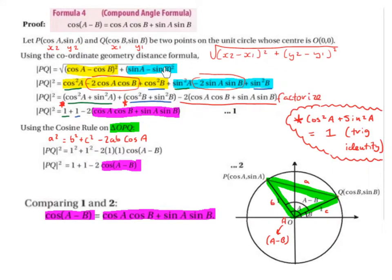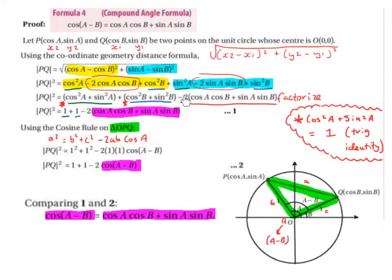Likewise, (sin a - sin b)² gives sin²a - 2sin(a)sin(b) + sin²b. Next we simplify. So cos²a and sin²a give us cos²a + sin²a — that's a very important trigonometric identity. Then cos²b and sin²b give us cos²b + sin²b — again our trigonometric identity. We can factorise -2cos(a)cos(b) and -2sin(a)sin(b) by bringing the -2 outside the brackets, giving -2(cos(a)cos(b) + sin(a)sin(b)).